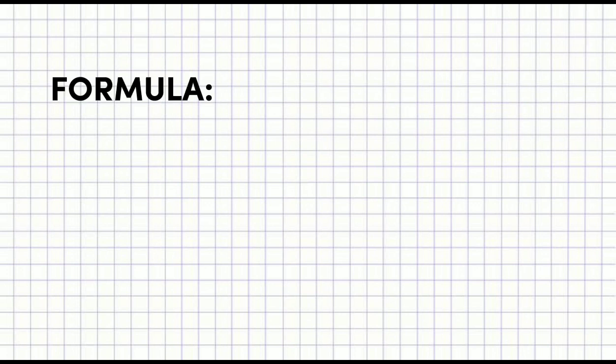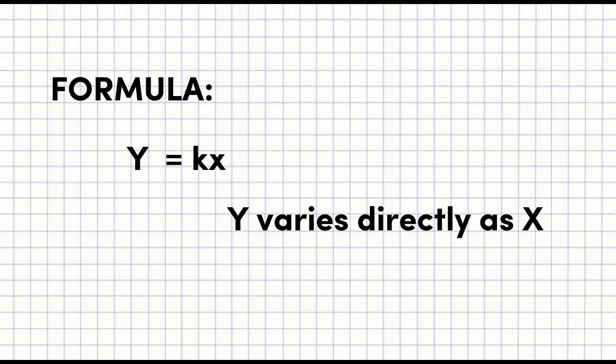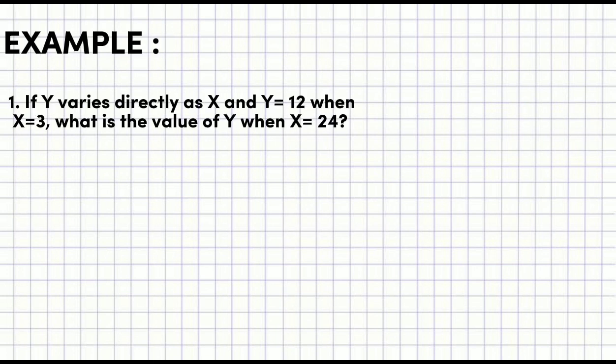The formula is y = kx, or y varies directly as x. So now, here's an example. If y varies directly as x and y = 12 when x = 3, what is the value of y when x = 24?